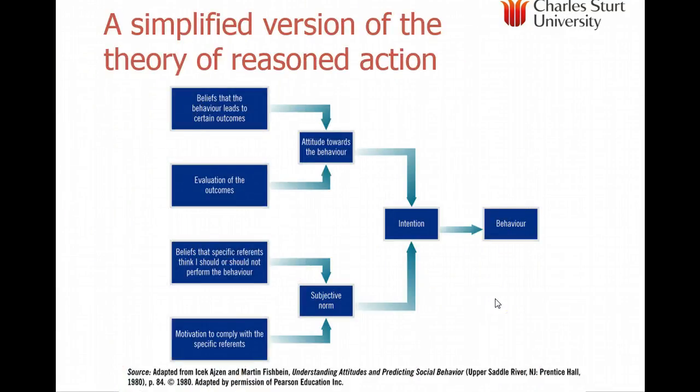A wider theory is the theory of reasoned action, which starts to talk about attitude towards the behaviour rather than the object. Developed by Martin Fishbein and Icek Ajzen, it has two major parts: first, the belief that the behaviour leads to certain outcomes and the evaluation of those outcomes — giving us attitude towards the behaviour, not the object. Second, subjective norms — beliefs about whether one should or should not perform the behaviour, or the motivation to comply with specific reference groups. This works well for highly socially visible or important decisions.